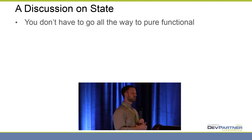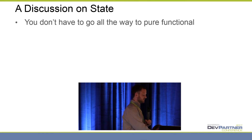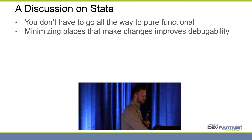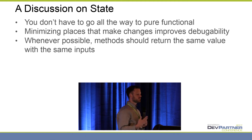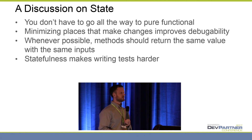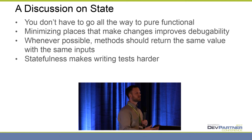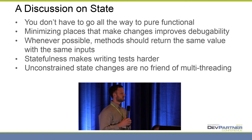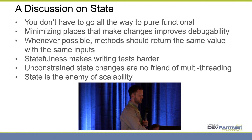Quick discussion on state: you don't have to go all the way to pure functional. Purity is potentially overrated — you can get partway there. Minimizing the places that make changes improves your debuggability; things don't surprise you and jump out of the woodwork. Whenever possible, methods should return the same value with the same inputs. Resist the urge to increment something in global state and completely change the outcome of calling a method. Statefulness makes writing tests harder — if you've tried to write a unit test with a bunch of global state, you know how difficult it is to get that state in the right place for a particular test. And unconstrained state changes are not a friend of multithreading or scalability. If you ever find yourself needing to make your software run faster, unconstrained state changes are going to cause you problems.